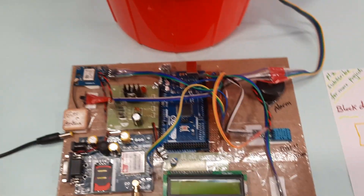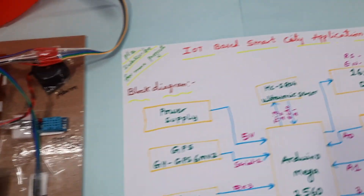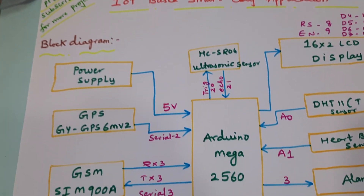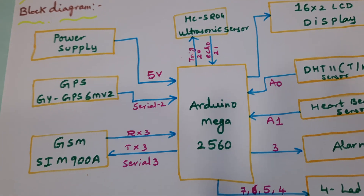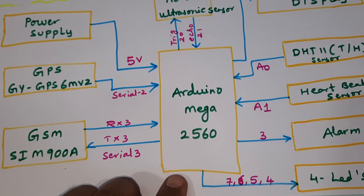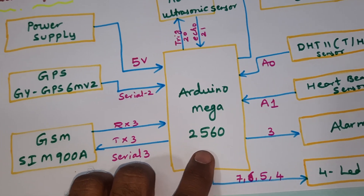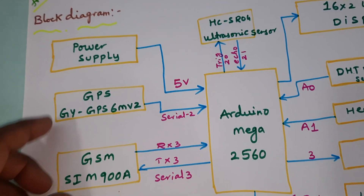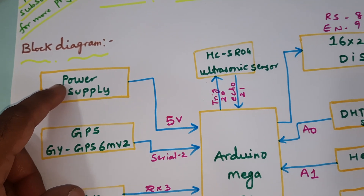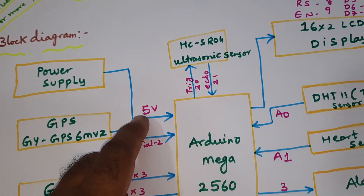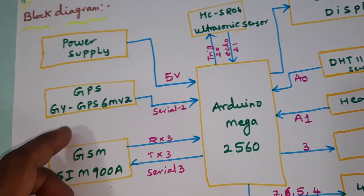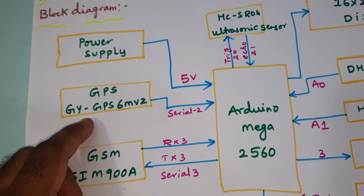The project title is IoT Based Smart City Application. We are using an Arduino Mega 2560 board with a 9-volt adapter, which is converted into 5 volts and supplied to the Arduino Mega 2560 board.